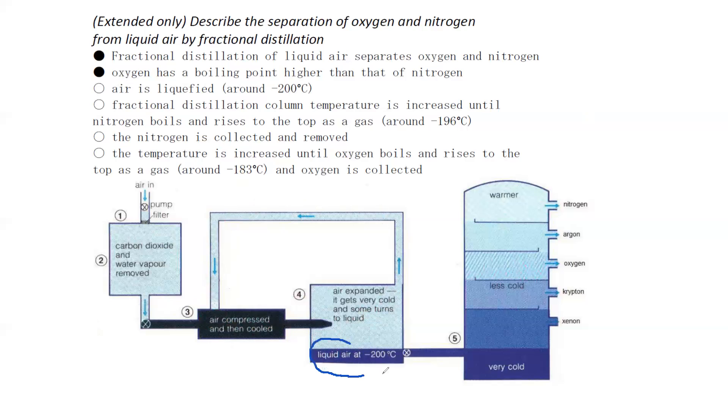Liquid air is blue in color. Why is the liquid air blue? Because liquid oxygen is blue. That's why liquid air is blue in color. Then we have a fractionating column. At different temperatures, we obtain these gases. This is how we carry out fractional distillation of air.